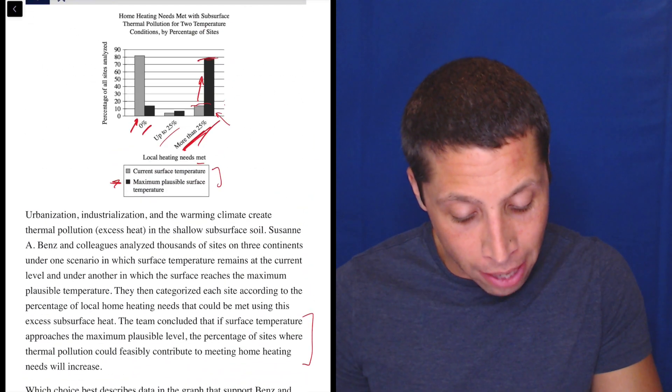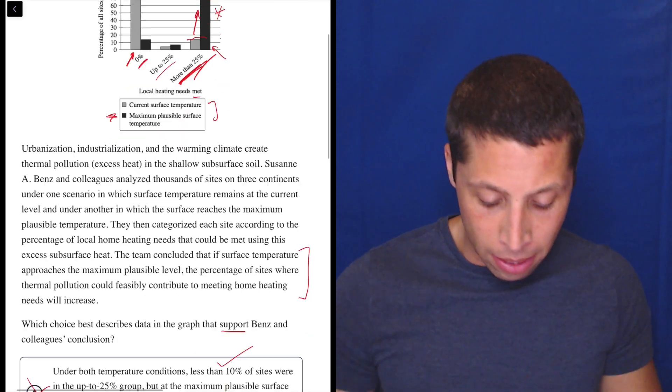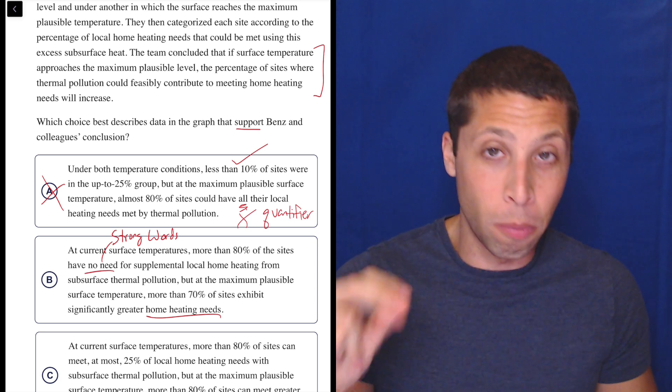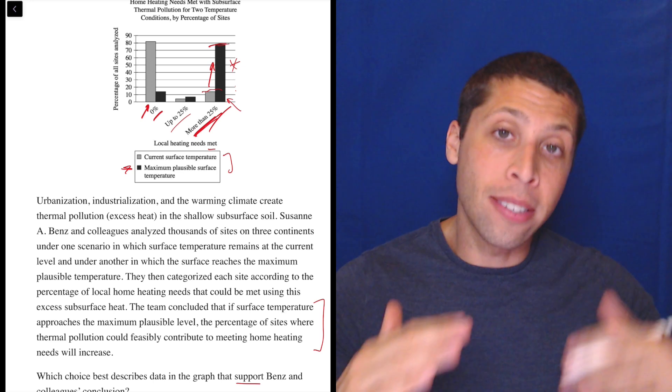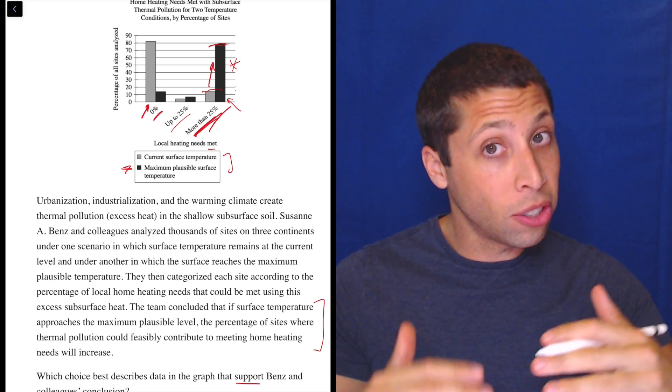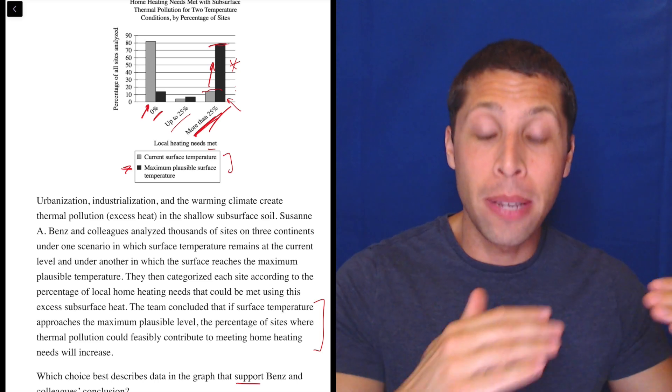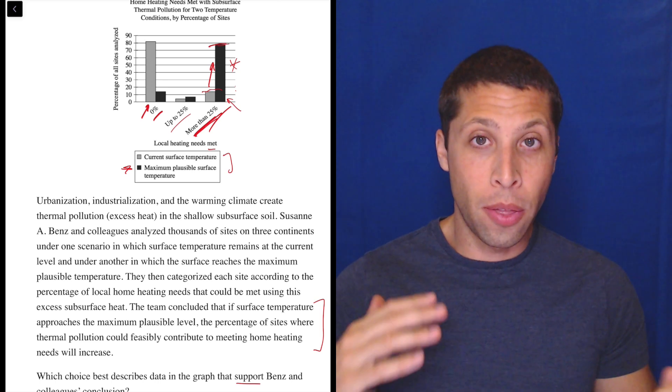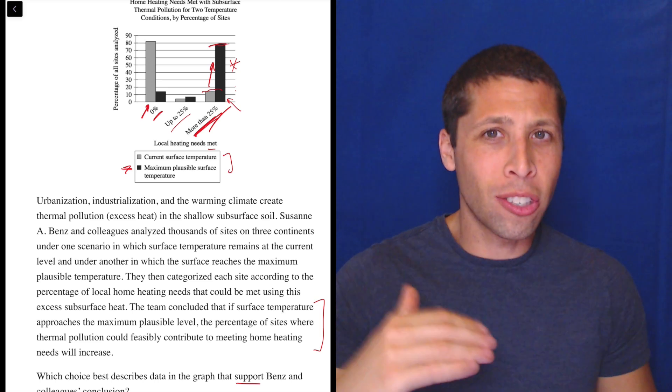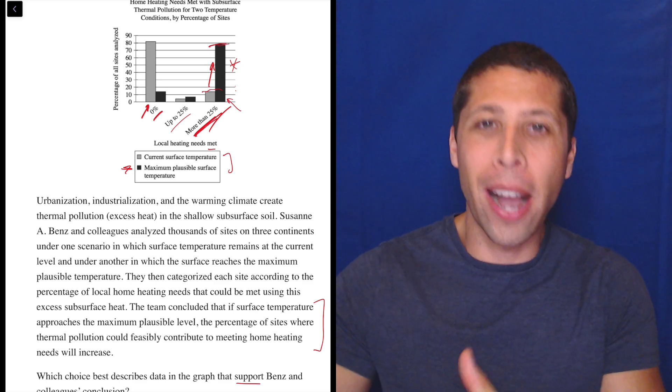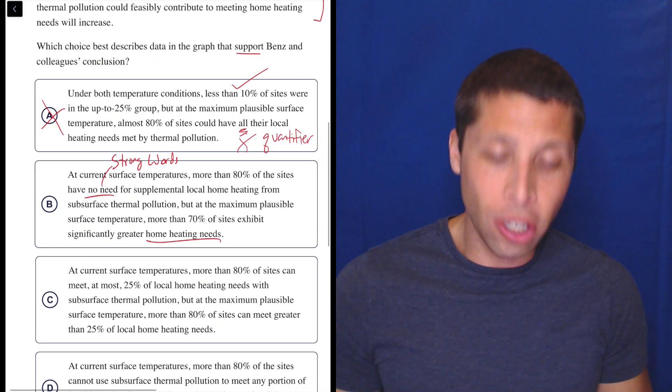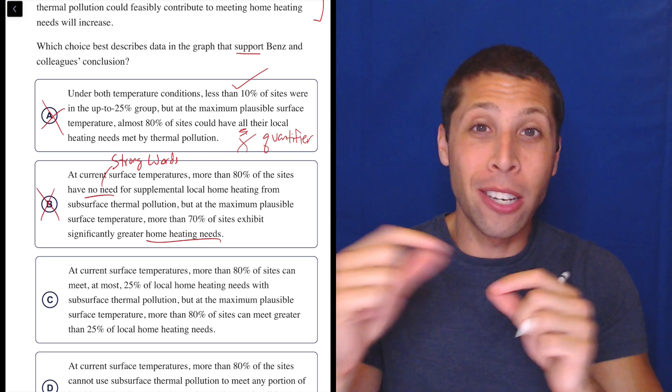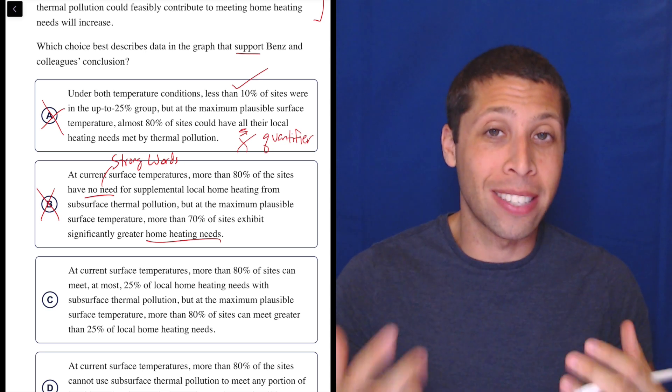So that's another one of those strong words, those trap answers that we're used to. So I don't know. But at the maximum plausible surface temperature, more than 70% of sites exhibit significantly greater home heating needs. Again, this is not true. So yes, that number for the black box right here looks like it's more than 70, but look at what the choice says. It's changing the game. It's changing what the chart is about, right? More than 70% of sites exhibit significantly greater home heating needs. This chart is not showing that the heating needs of the homes goes up.